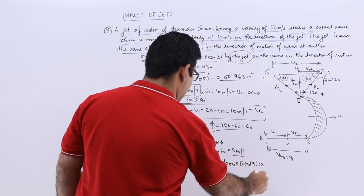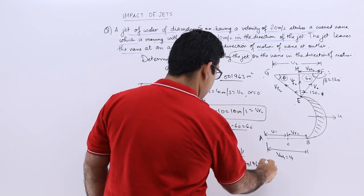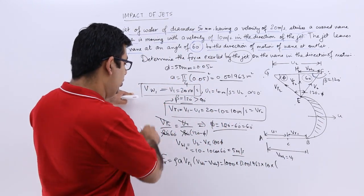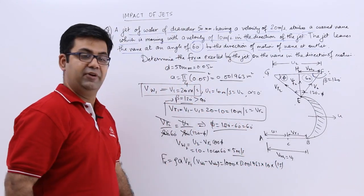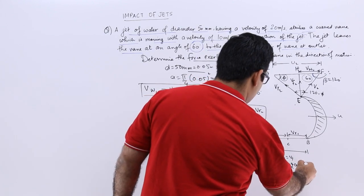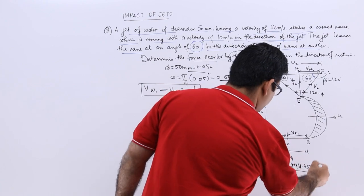Into vr1, what is vr1? It is 10 into vw1. How much is vw1? 20, 20 minus 5 is 15. So when you do this calculation, you get a value which is 294.45 newtons.